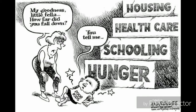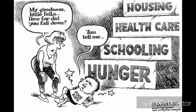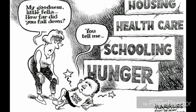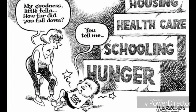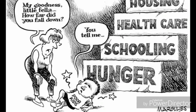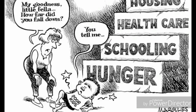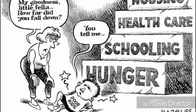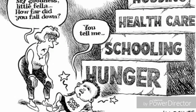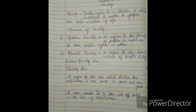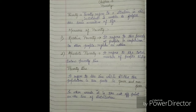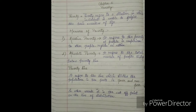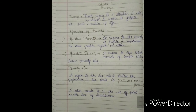Absolute poverty refers to the total number of people living below poverty line. These are people who cannot afford the basic needs of life — they lack food, clothing, shelter, and education. They are those who are actually poor and living below poverty line.